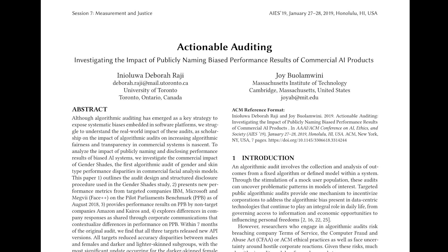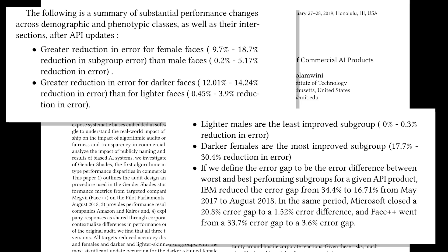Dr. Deborah Raji and Dr. Joy Buolamwini, who were both involved in the original study, published a follow-up study analyzing the impact of Gender Shades on the accuracy of the commercial AI systems. They found that all of the companies originally audited significantly reduced the error rate of their algorithms on darker-skinned women, as well as on darker-skinned men and lighter-skinned women, and some companies explicitly referenced the study when they published their updated models. So while external auditing does require the model to be released publicly — potentially causing some harm before the audit is complete — it can be an effective approach.